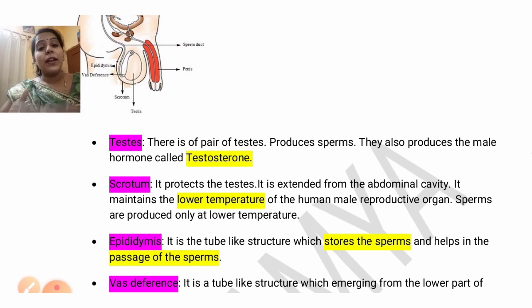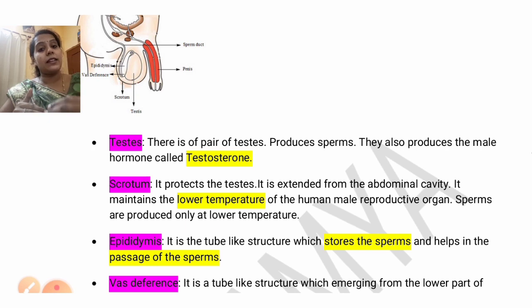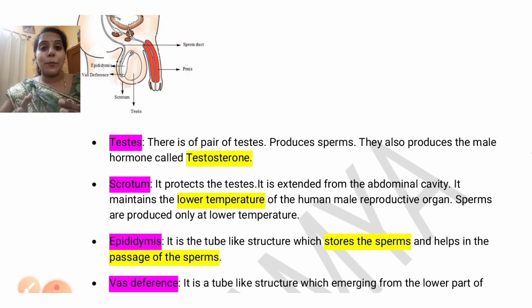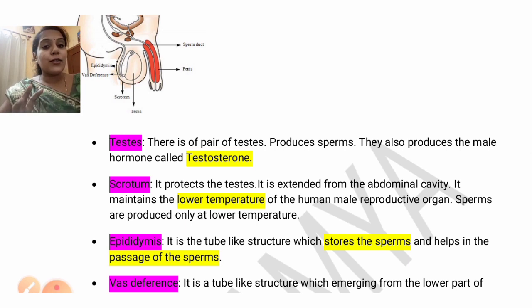Below the abdomen and the stomach, in the human male, there is presence of scrotum along with the penis. So now you have understood the function of the scrotum.